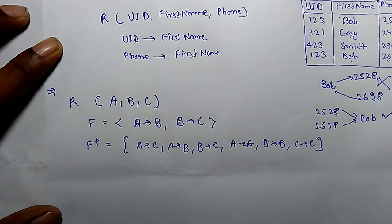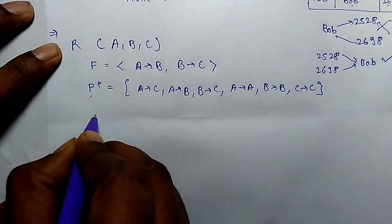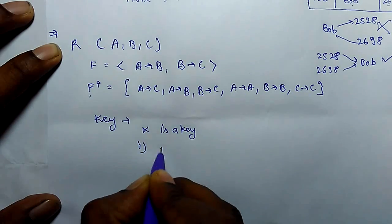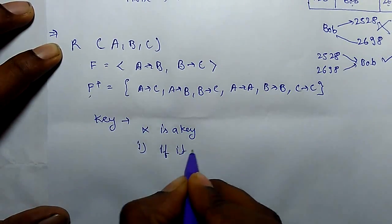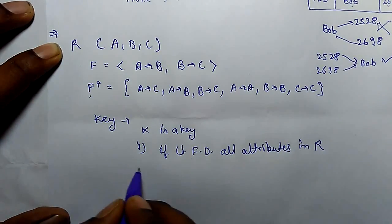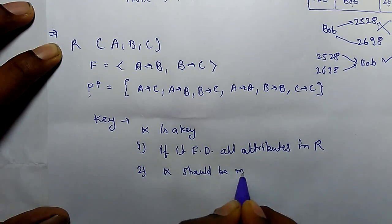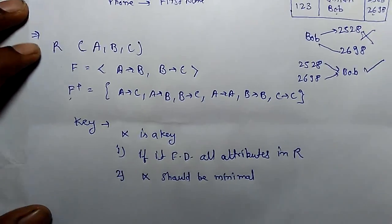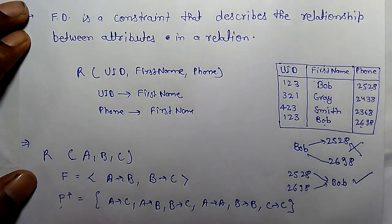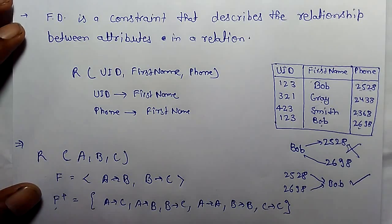From F-closure, we can find the key, which is an important part of functional dependency. X is the key if it functionally determines all attributes in relation R. The second point is that X should be minimal. This leads to the concept of candidate key, which we will learn further. So functional dependency is a concept where one attribute uniquely determines other attributes, and a set of attributes can also uniquely determine other attributes.